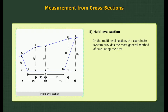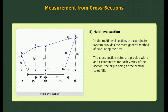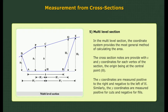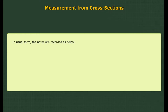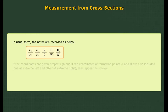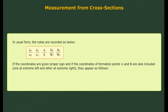In the multi-level section, the coordinate system provides the most general method of calculating the area. The cross section nodes are provided with X and Y coordinates for each vertex of the section, the origin being at the central point H. The X coordinates are measured positive to the right and negative to the left of H. The Y coordinates are measured positive for cuts and negative for fills. The nodes are recorded as shown, and if proper signs are given and coordinates of formation points A and B are also included, one at extreme left and one at extreme right, they appear as in the formula.